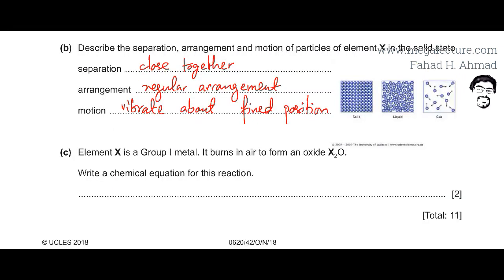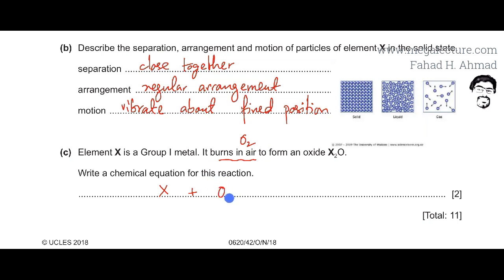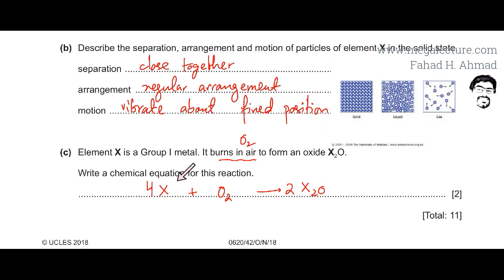Moving to part E: element X is a group 1 metal. It burns in air to form an oxide, X₂O, and we have to write a balanced chemical equation for this reaction. Element X reacts with O₂ — the only reactive element in air, since nitrogen is relatively inert. The product is X₂O. To balance the equation: there are two oxygen atoms on the left-hand side, so there should be two molecules of X₂O on the right, giving four X atoms. Therefore, we need 4X on the left-hand side as well, giving the balanced equation: 4X + O₂ → 2X₂O.